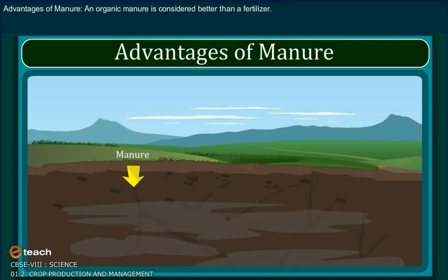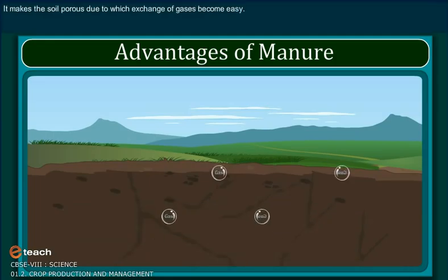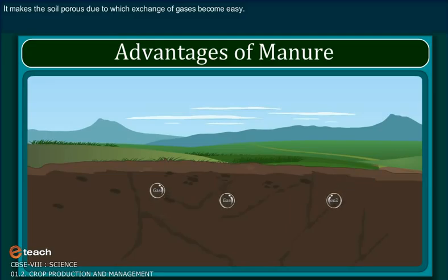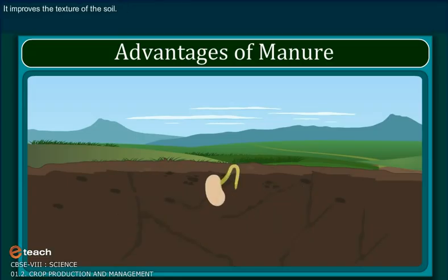Advantages of manure. Organic manure is considered better than fertilizers. This is because it enhances the water holding capacity of the soil. It makes the soil porous, due to which exchange of gases becomes easy. It increases the number of friendly microbes. It improves the texture of the soil.